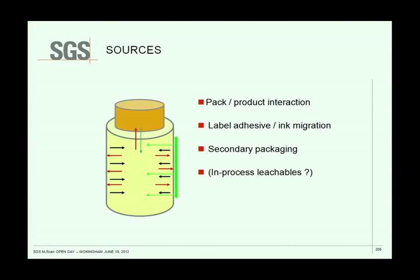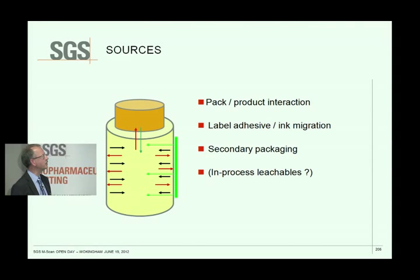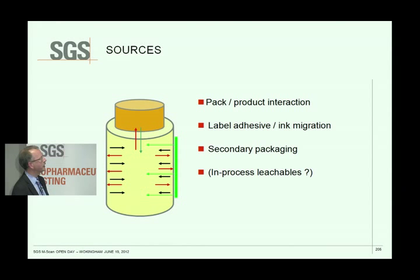So where are these things coming from? They're coming from interaction between your drug product and the packaging. They can also come from label, adhesive and ink migrating through the packaging — that's particularly prevalent when you have a semi-permeable packaging such as you do with an ophthalmic drug product. They can come from secondary packaging volatiles that are migrating into your drug product, released from your secondary packaging. And there's also a possibility of things that have been leached out before your product even reaches the pack.